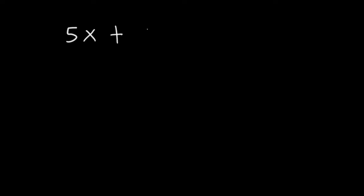In this video we're going to work on some examples of algebra problems where you have to combine like terms. Let's start with a simple example. Let's say we have the algebraic expression 5x plus 8 plus 7x and we're told to simplify the expression. We need to do something called combining like terms.